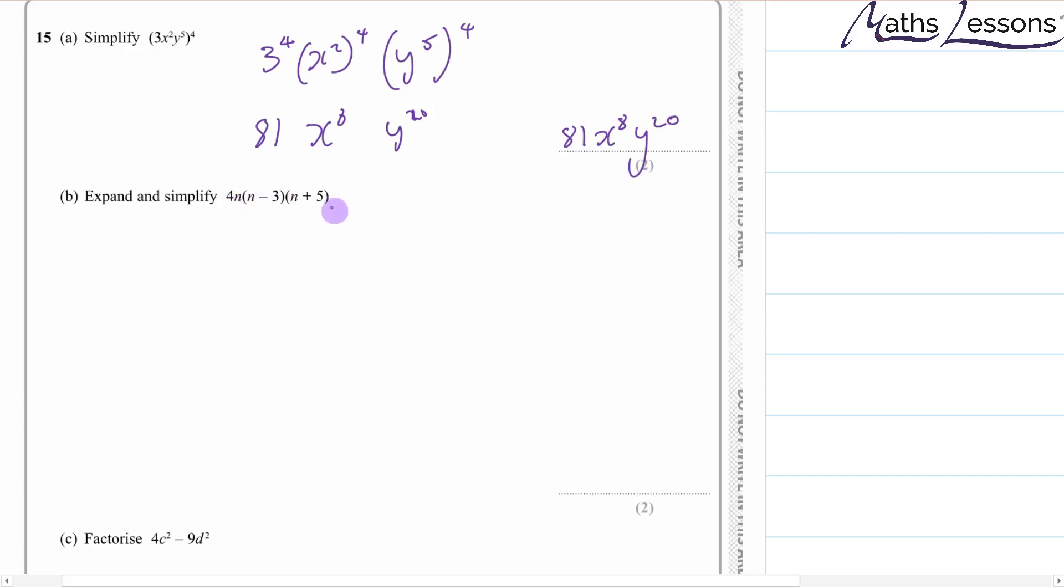Expand and simplify. What I would do is I would just multiply these two brackets together to start with. Now a common mistake I saw was timesing the n minus 3 by 4n and then times the n plus 5 by 4n. Now if you just imagine what that would be if you just did numbers, you just say you had 3 times 4 times 5.